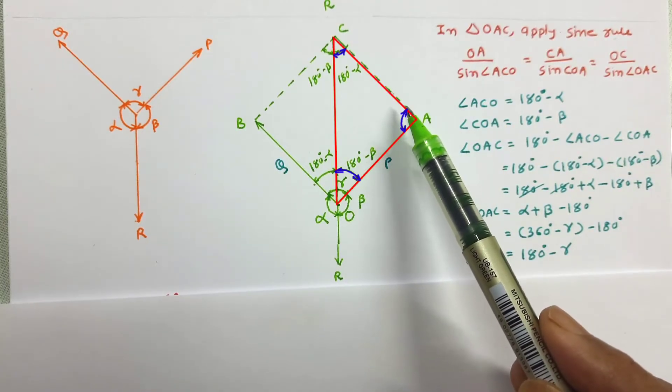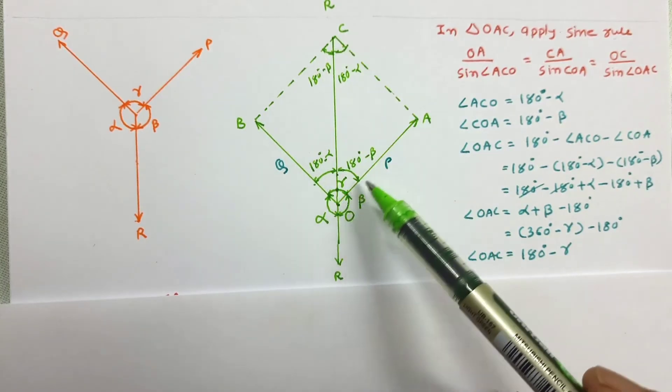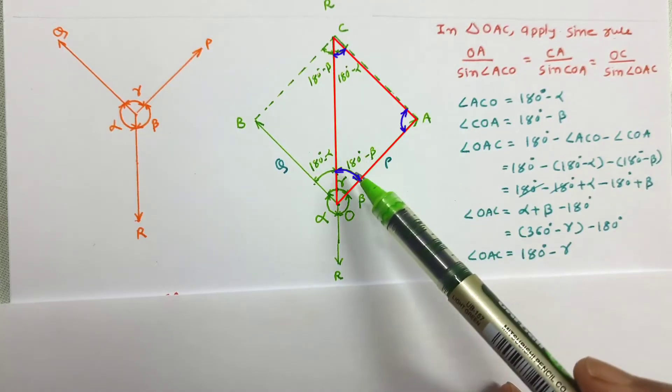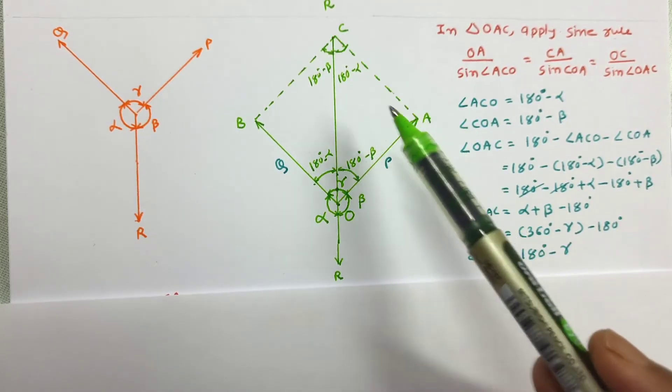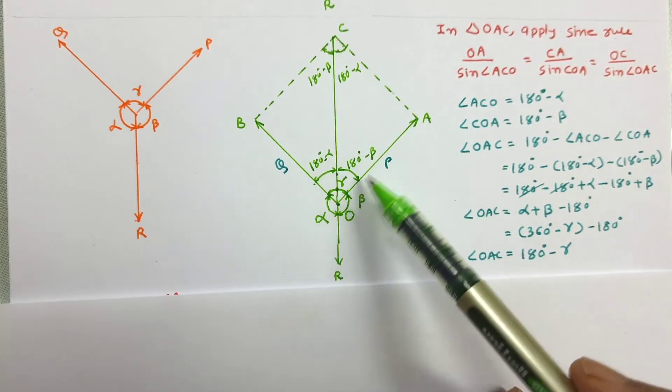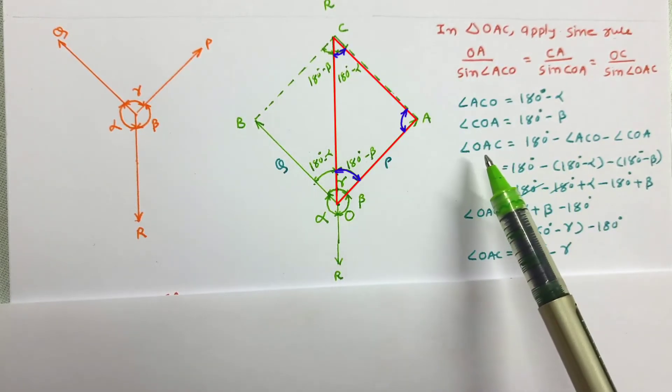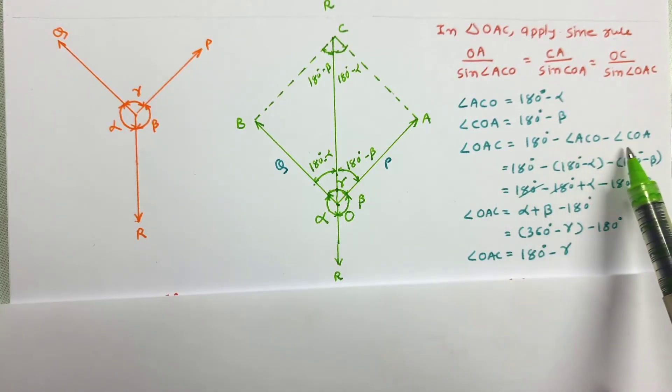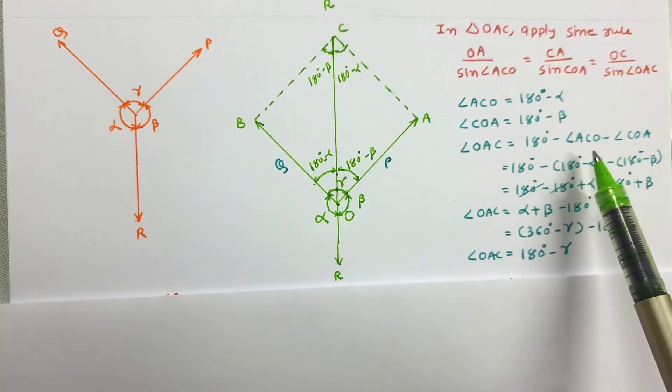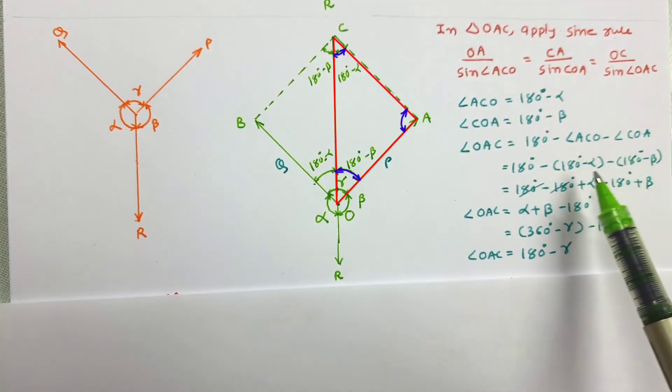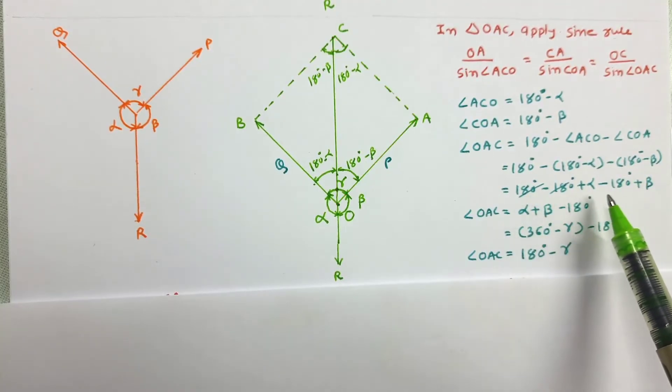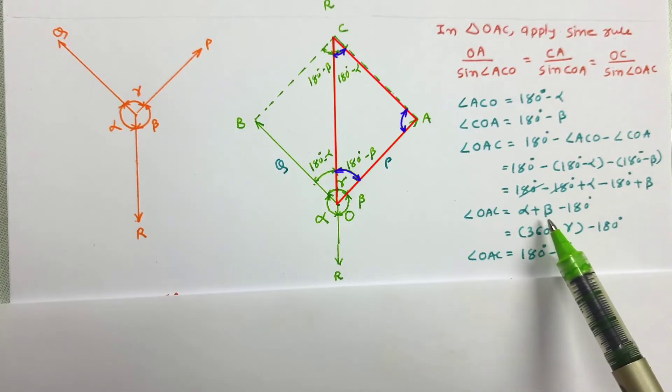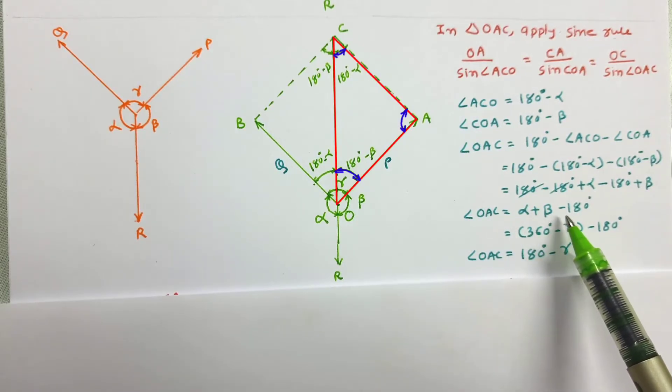And now we want to determine this angle OAC. We know that the summation of all three angles of triangle is 180 degrees. So we know these two angles. 180 minus these two angles will give us this angle OAC. So angle OAC, that is 180 minus angle ACO minus angle COA. Here the values of angle ACO and angle COA have been equated. And on simplification, the value of OAC has been obtained as alpha plus beta minus 180.